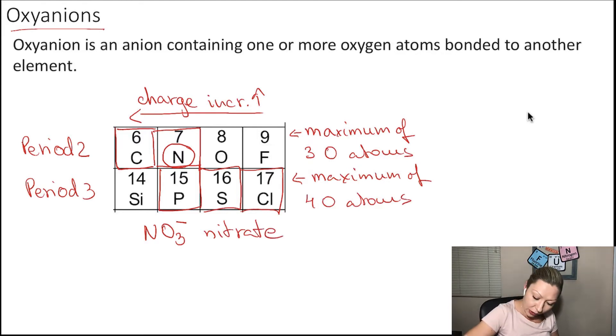What about carbon? When carbon makes an oxyanion, it can also have a maximum of three oxygen atoms. So I can write out the formula CO3. The charge should increase. So if I had one minus in NO3, I need to have two minus. So one more negative charge. I'm going to call this the carbonate ion. Do you see the pattern that I have -ate ending here and -ate ending also here?